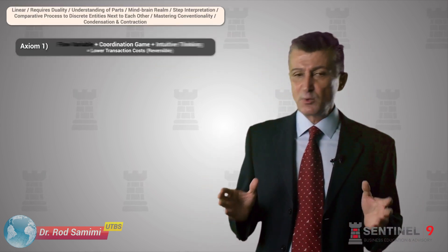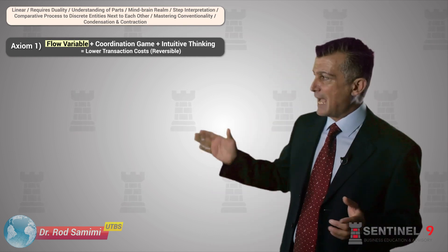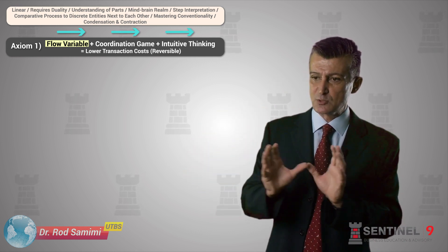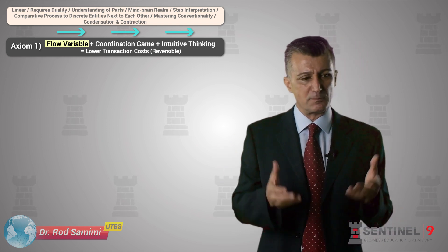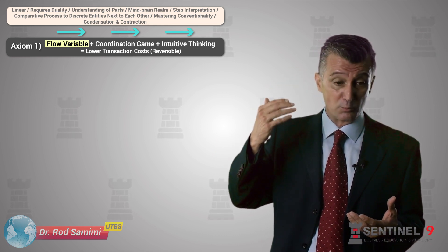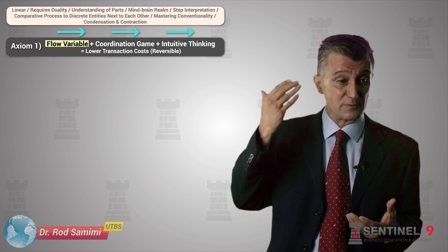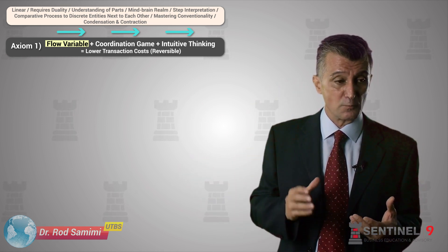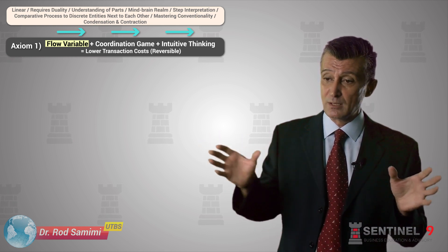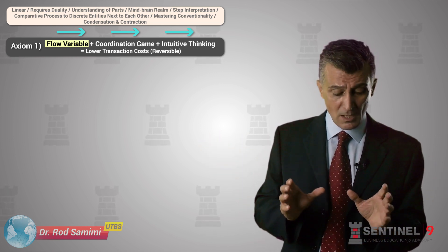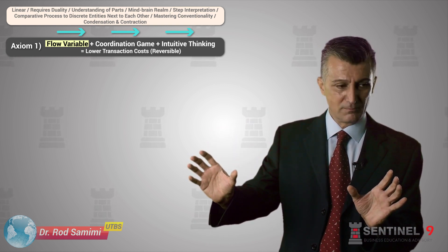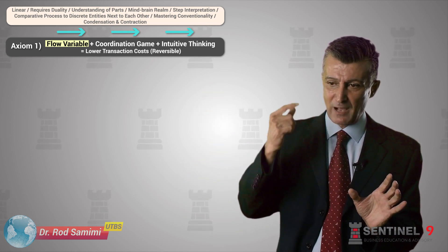The first axiom I would like to share is the axiom of flow variables, intuitive thinking, and coordination games together. Flow variables, intuitive fast thinking — as the literature puts it — is a well-established concept; people have won the Nobel Prize for identifying different modes of thinking for different activities. We are using it to plug into our theoretical framework. In the published book it is properly referenced: flow variables, intuitive thinking, coordination games, asymmetric positioning, fast thinking.